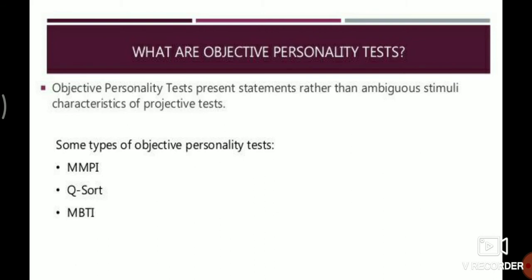Examples of objective personality tests include Q-sort, MBTI (Myers-Briggs Type Indicator), which contains a 4-scale measure, and MMPI (Minnesota Multiphasic Personality Inventory).